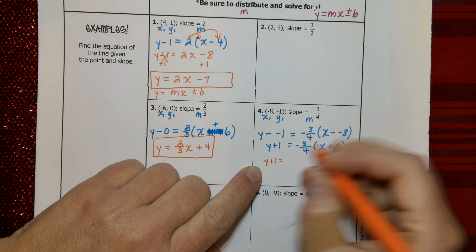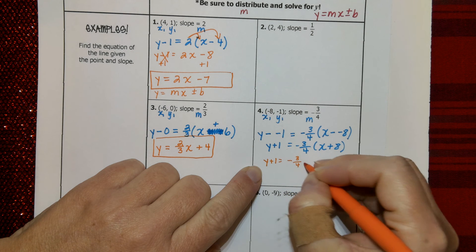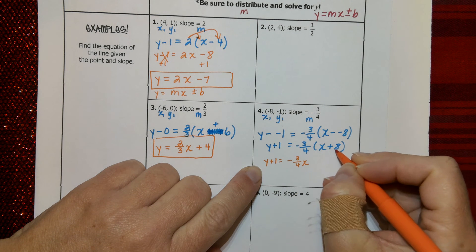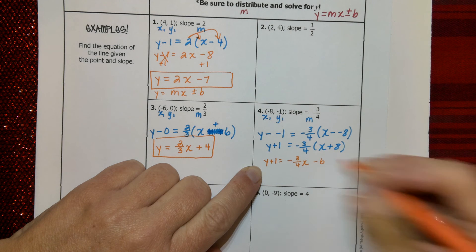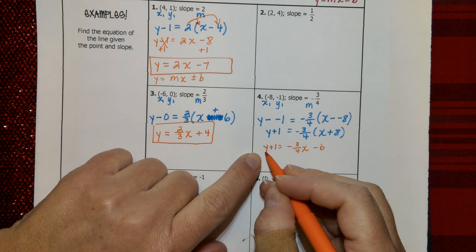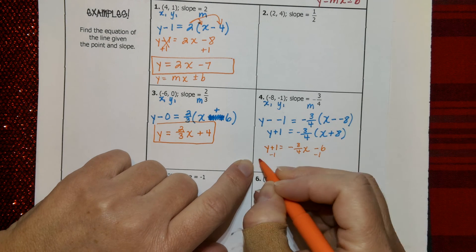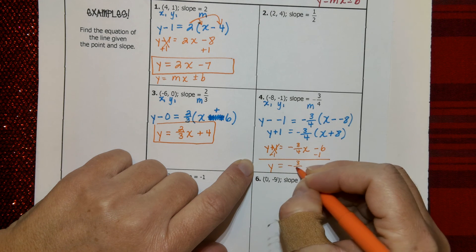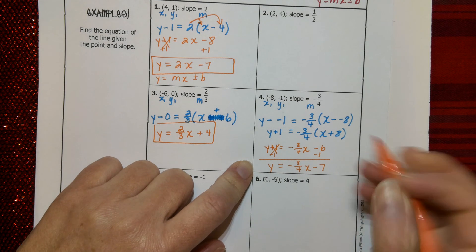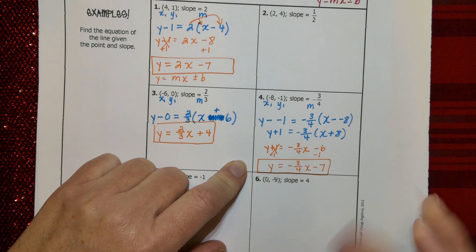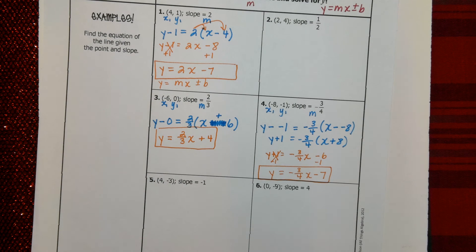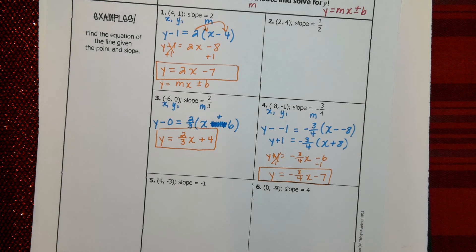Now, we need to distribute that negative 3 fourths. Negative 3 fourths times X is negative 3 fourths X. Negative 3 fourths times 8, or negative 3 fourths of 8, is negative 6. Okay. Now, solve for Y. So I need to subtract 1. Those would cancel. And Y equals negative 3 fourths times X minus 7. Cool. Y equals MX plus B, or in this case, Y equals MX minus B. That's your Y intercept. That's your slope. Point slope form.